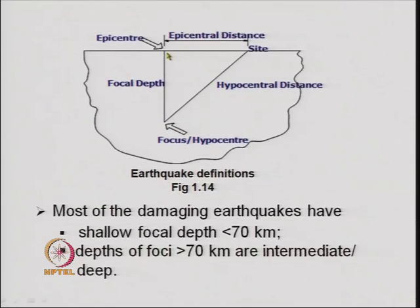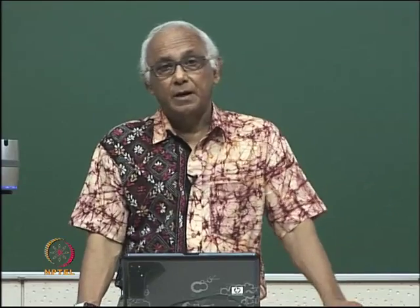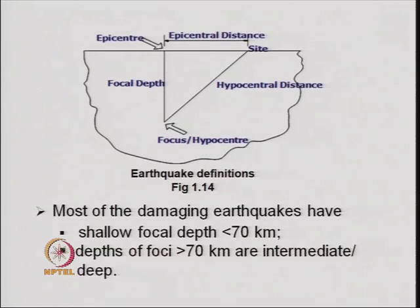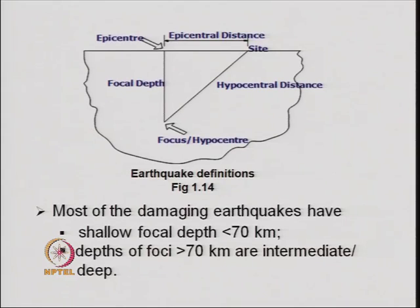The inclined distance between the site and the focus is called the hypocentral distance, and the vertical distance between the epicenter and the focus is called the focal depth. The epicentral distance is represented by small r, capital R, or delta. The focal depth is represented mostly by small h. Most damaging earthquakes have shallow depth, that is, less than 70 kilometers. Depths greater than 70 kilometers are categorized under intermediate or deep earthquakes.